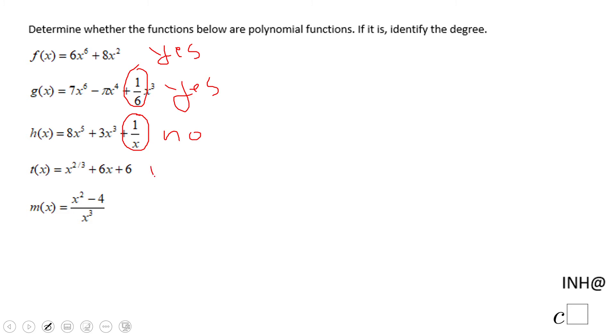T(x) is another example of a function that is not a polynomial function. Why? Because we have x to the two-thirds. So whenever the exponent is a rational number, that is not a polynomial function.